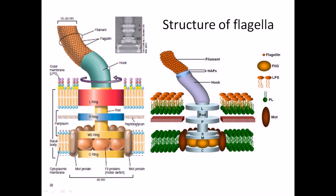The hook is very flexible, and the proteins making it are also very flexible. The hook is the intermediate link between the flagellar filament and the flagellar rings. The flagellar filaments are mostly made up of a protein called flagellin. Many flagellin proteins come together and attach to each other to form the filament structure, looking like grape-like structures.